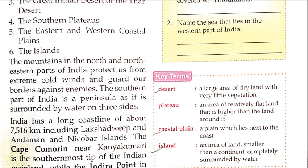The southern part of India is a peninsula as it is surrounded by water on three sides. Peninsula means 'praya-dweep' — it means the southern part of India is surrounded by water on three sides, and is connected to land only on one side.